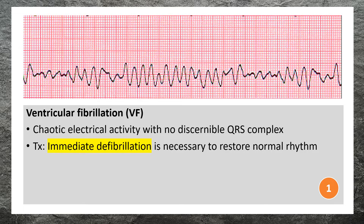Ventricular fibrillation is a chaotic electrical activity with no discernible QRS complex. Immediate defibrillation is necessary to restore normal rhythm.